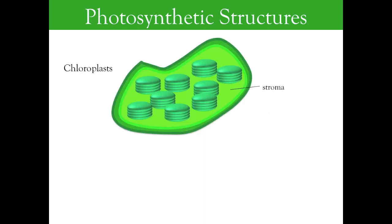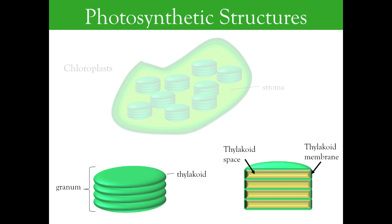Within each chloroplast, situated in a fluid called the stroma, membrane sacs called thylakoids form stacks called grana, which increase available surface area for the photosynthetic reactions.